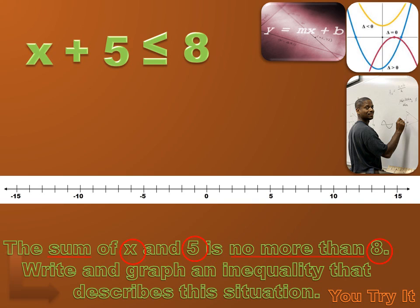Now, how do I graph that? First I need a number line. x plus 5 has to be less than or equal to 8, so it includes 8 — I fill in the dot over the 8. Then I run an arrow to the left towards the less-than numbers. That is the graph of the sum of x and 5 is no more than 8.